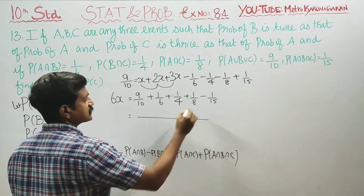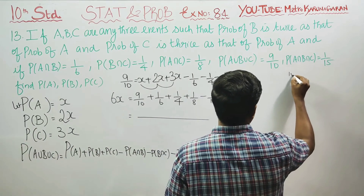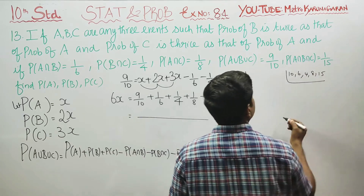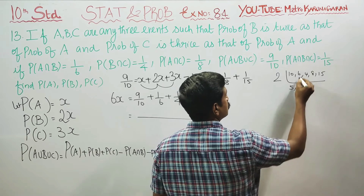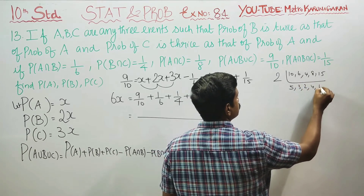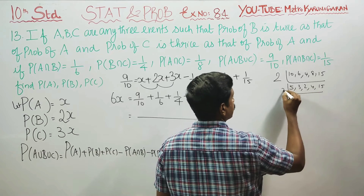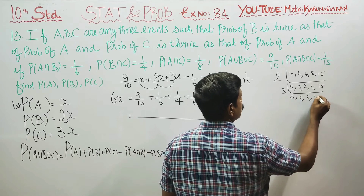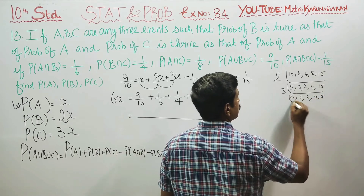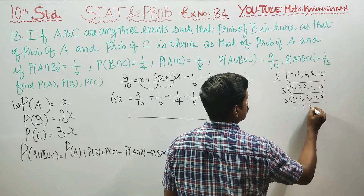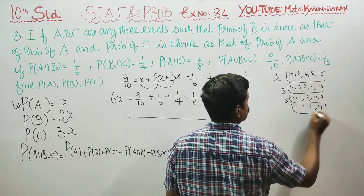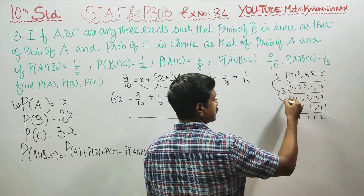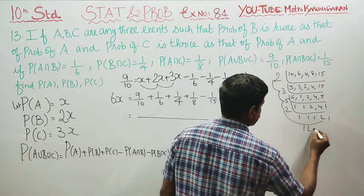Now we find the LCM of 10, 6, 4, 8, and 15. Taking multiples: 2 times, 3 times, 2 times, 4 times, and 15. Then further: 3 twos are 6, 6 fives are 30, 3 twos are 60, 6 twos are 120. So the LCM is 120.